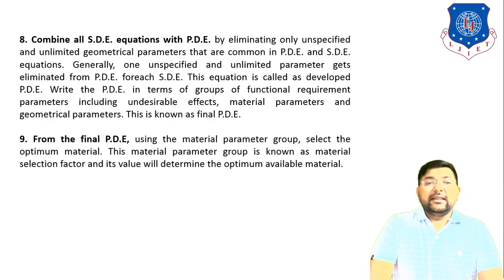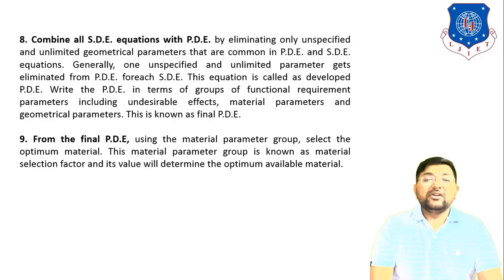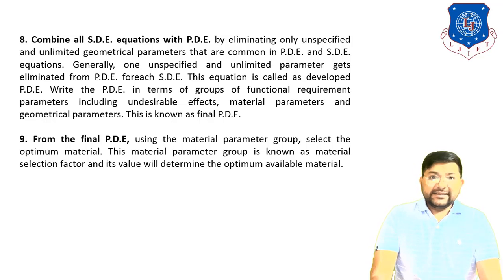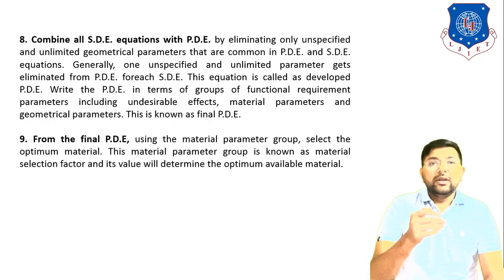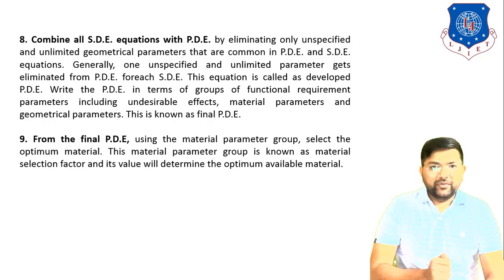Step nine: from the final primary design equation, use the material parameter group to select the optimum material. This material parameter group is known as the material selection factor, and it determines the optimum available material. This is the complete procedure to solve any problem using the Johnson Method.